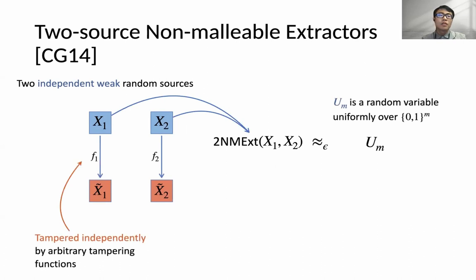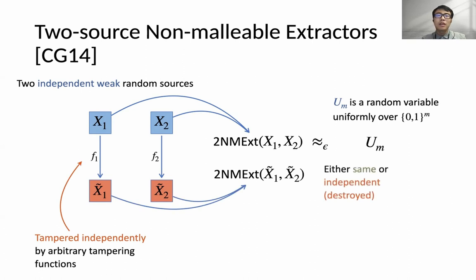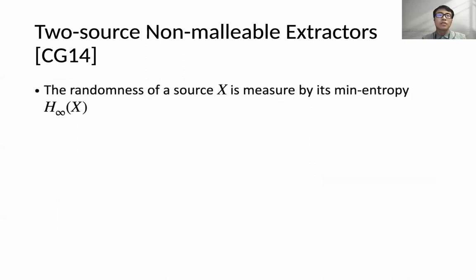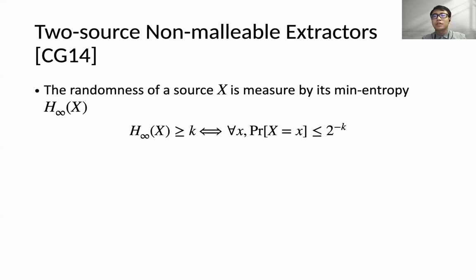Furthermore, the input sources can be tampered independently by arbitrary tampering functions. The security requires that the tampered output is either the same as the original one or is independent, meaning the value is destroyed. The randomness of a source is measured by its min-entropy. If the min-entropy of the source is greater than k, then for any x, the probability that the source equals x is less than 2 to the minus k. Intuitively, higher min-entropy means the source contains more randomness.